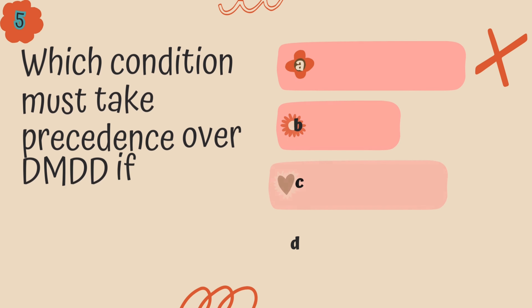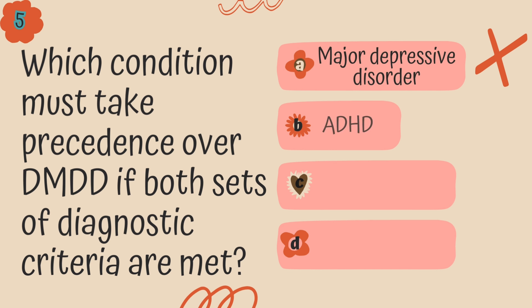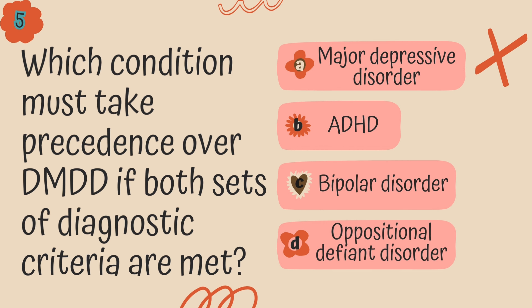Question 5. Which condition must take precedence over DMDD if both sets of diagnostic criteria are met? A. Major depressive disorder, B. Attention deficit hyperactivity disorder, C. Bipolar disorder, or D. Oppositional defiant disorder?